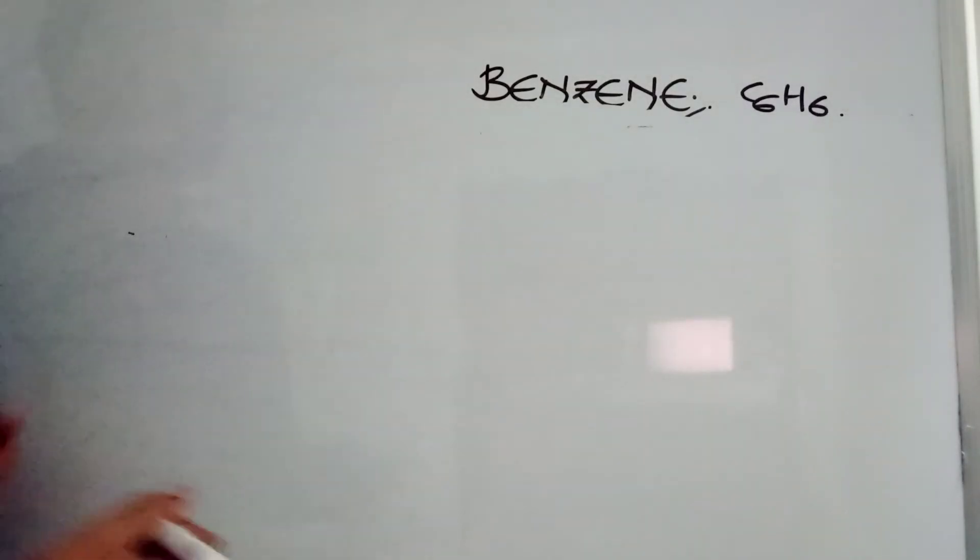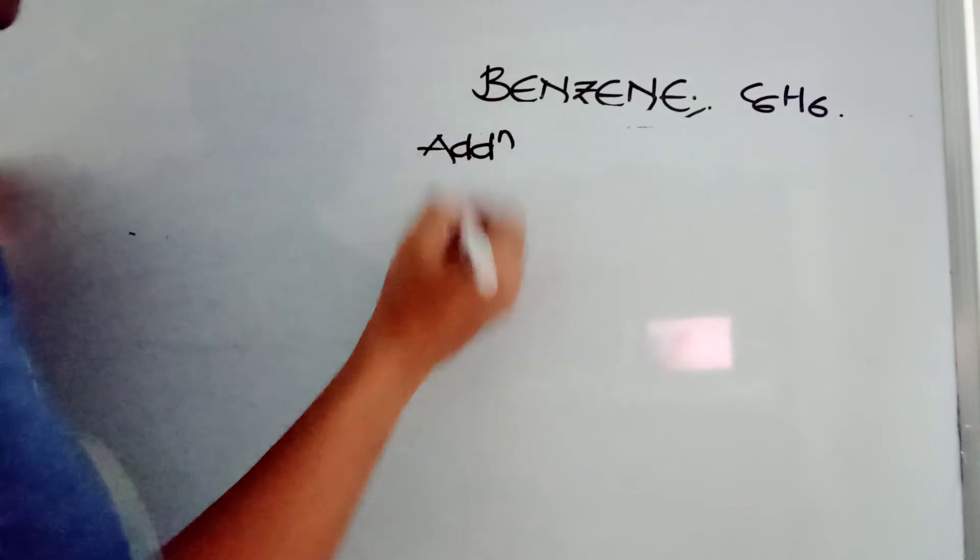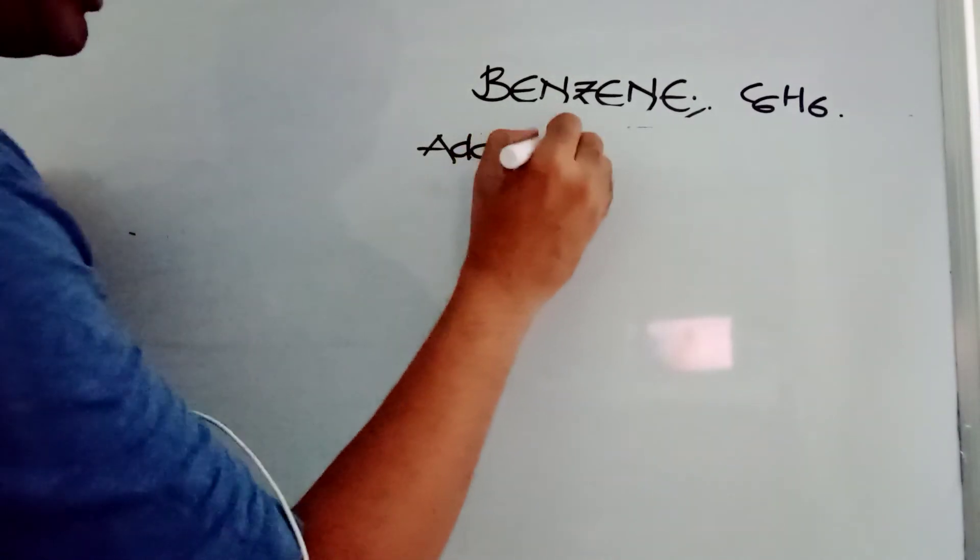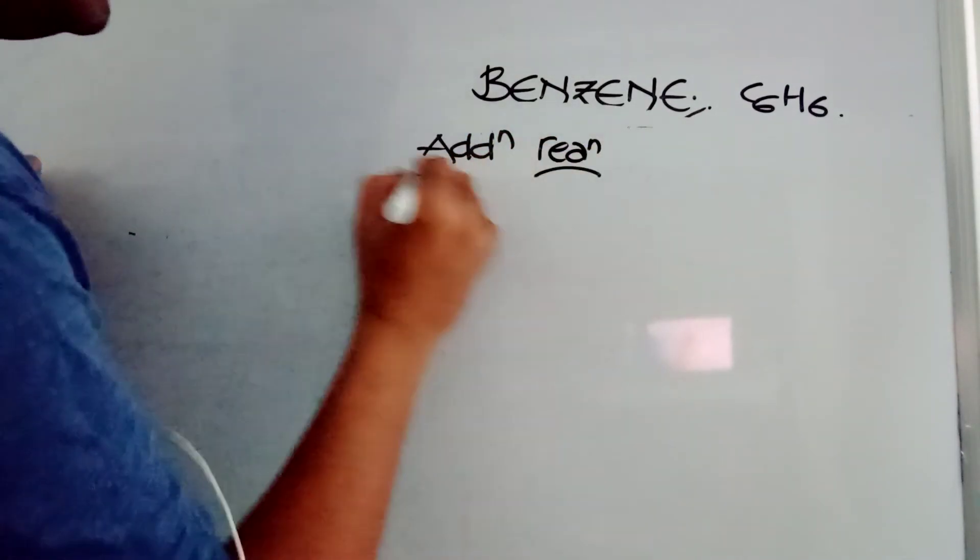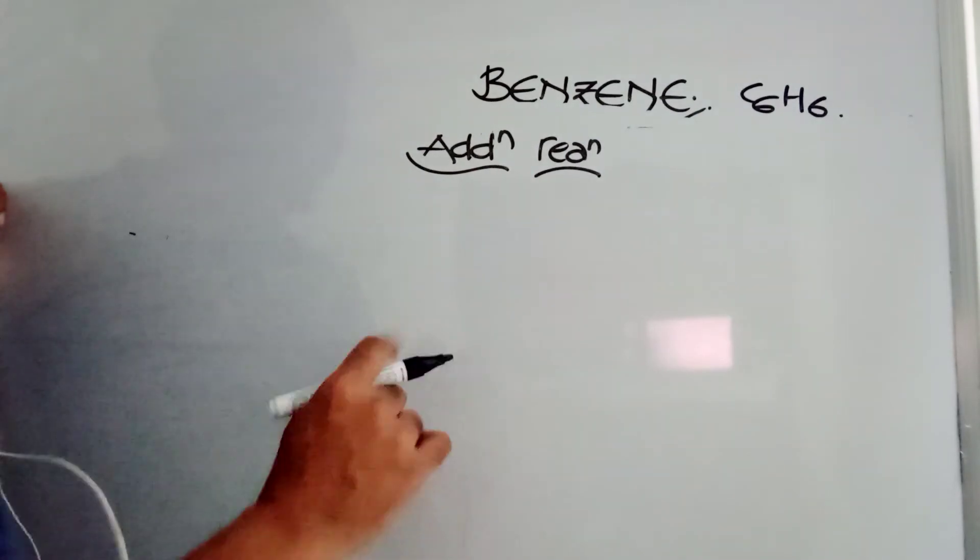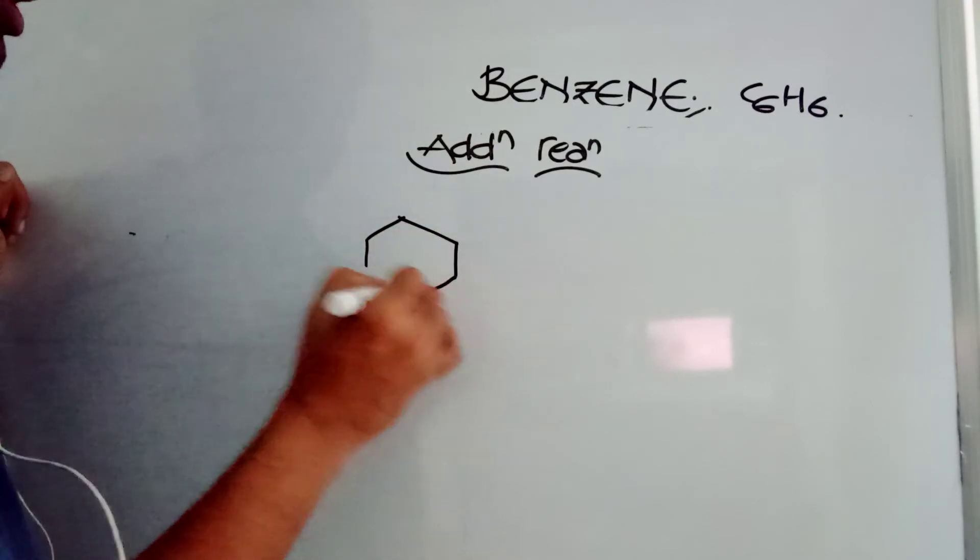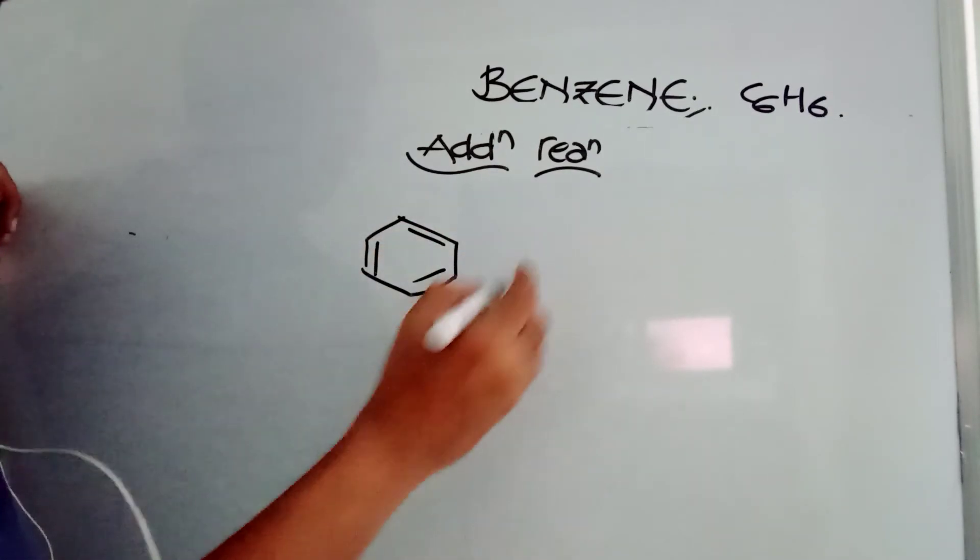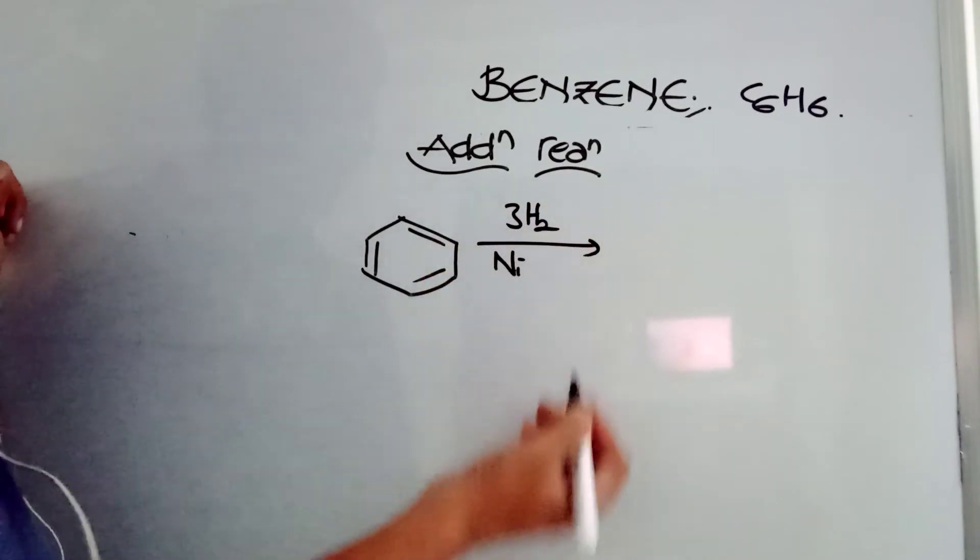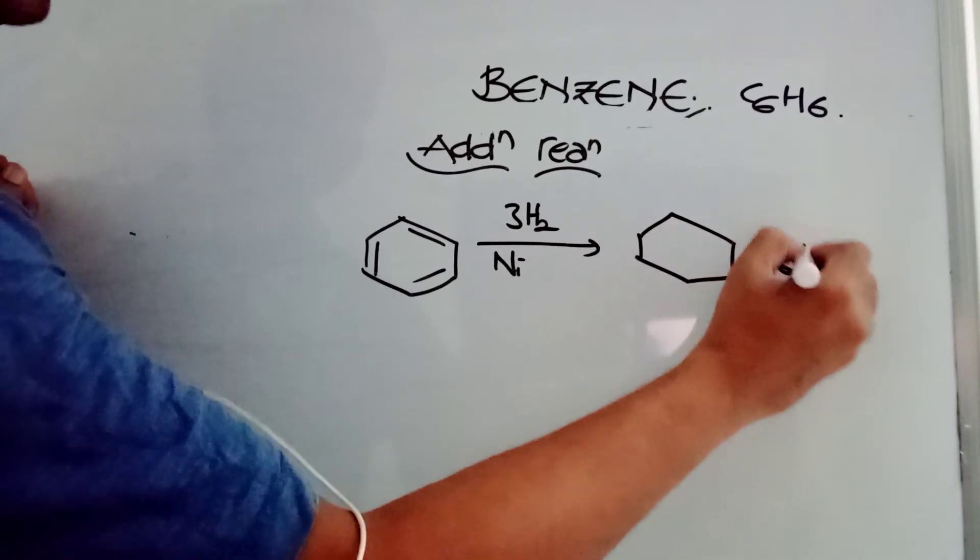Three additional reactions of benzene are very special. Benzene generally undergoes substitution reactions. Additional reactions are rare. Under special conditions, it undergoes additional reaction with three moles, three moles of the reagent, because benzene has three double bonds. So it reacts with three moles of hydrogen in presence of nickel or palladium or platinum, and cyclohexane is formed, C6H12.